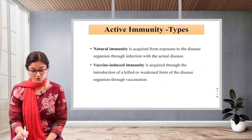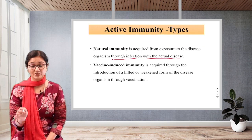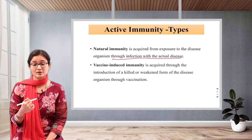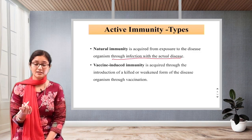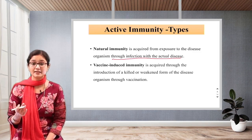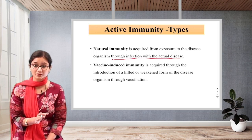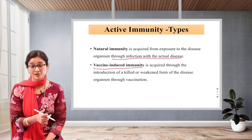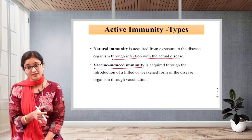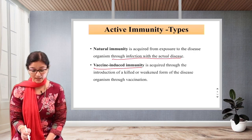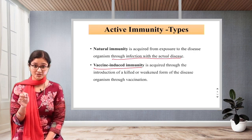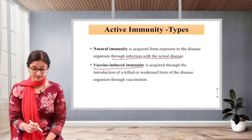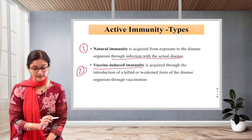Natural immunity is acquired from exposure to the disease organism through infection with the actual disease. For example, if I have suffered from chickenpox, my body has developed antibodies against it, and next time there is very little chance I will suffer from that disease because my body has already produced antibodies. The second type is vaccine-induced immunity, which is acquired through the introduction of a killed or weakened — live attenuated — form of the disease organism through vaccination. So these are the two types: first is natural, second is vaccine-induced.